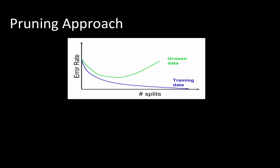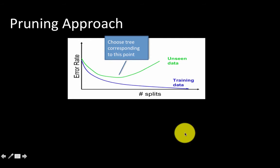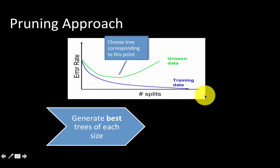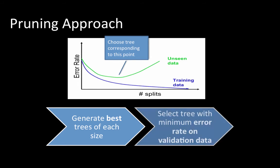Here we take a brief look at the pruning approach. We already saw this chart: as you increase the size of the tree, you get a reduction in the error rate on the training partition, but on unseen data or the test partition, the error rate starts going up beyond a point. Obviously, you want to choose the size of tree which corresponds to this optimal point, which gives you the lowest error rate on the test data. So you generate best trees of each size and then select the tree with the minimum error rate on the test data.